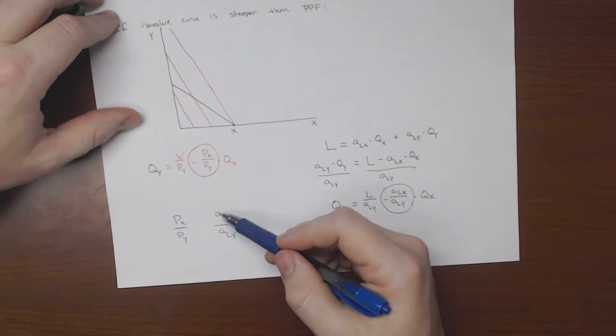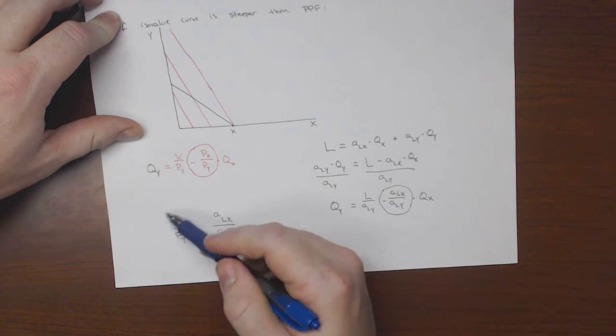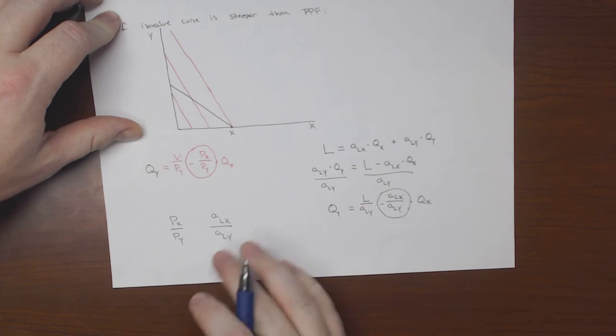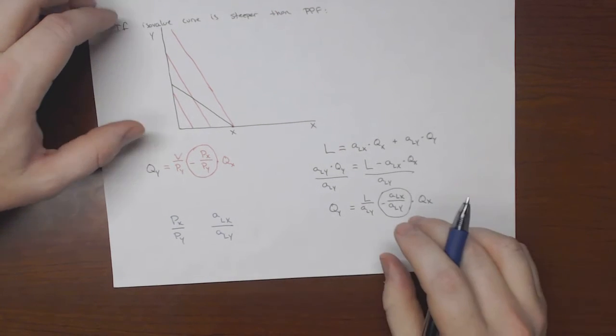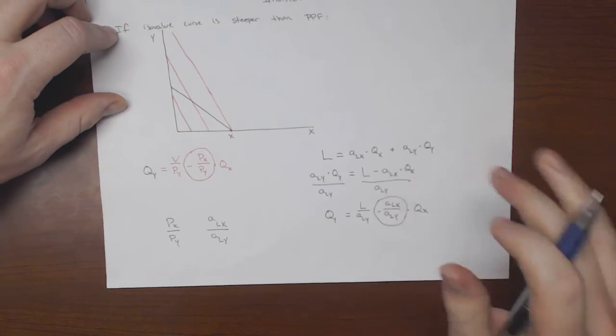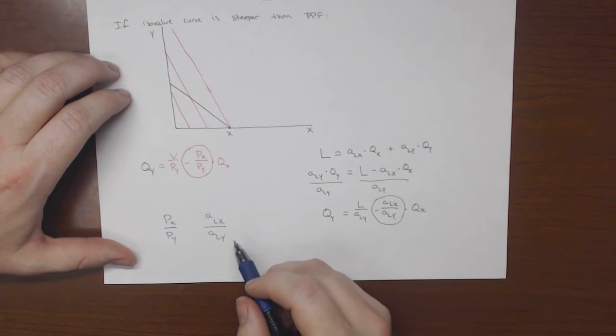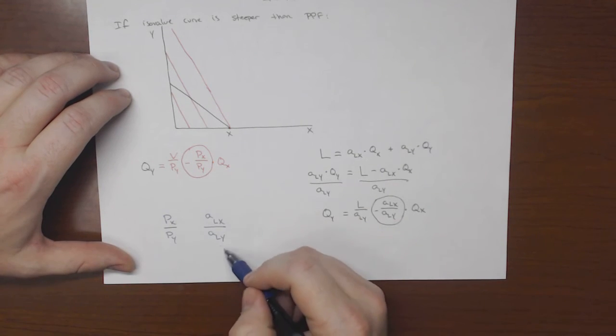Now, if this number here is bigger than this number, and notice that we've gotten rid of the negative signs. So we're getting, we've gotten rid of the negative signs since both of them have a negative sign, that's perfectly fine, we can do that. So if we do that, so if this number here is bigger,